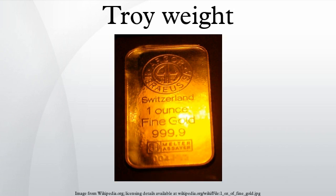Dutch system: the Dutch troy system is based on a mark of eight ounces, the ounce of twenty engels, the engel of thirty-two as. The mark was rated as 3,798 grains English troy, or 246.084 metric grams. The divisions are identical to the tower system. The troy system was also used in the apothecary system, but with different further subdivisions.